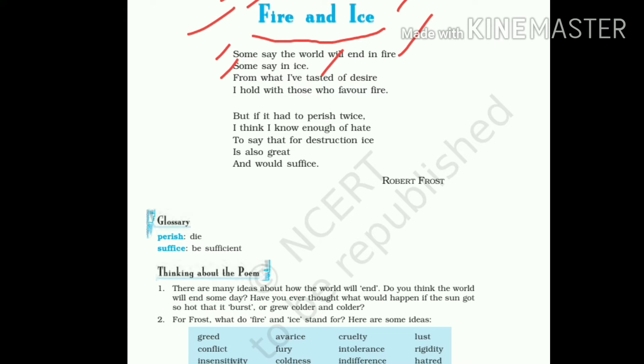Let's read further. From what I have tasted of desire, I hold with those who favor fire. The poet has said that the world is going to end one day and the reason would be either fire or ice. Now, he wants to say that from what I have tasted of desire - 'tasted' here means experienced. The word 'tasted' is used to explain his experience. So he says that as per my experience, desire would be the reason. Now, you will say that it was about fire and ice, but where did desire come from here?